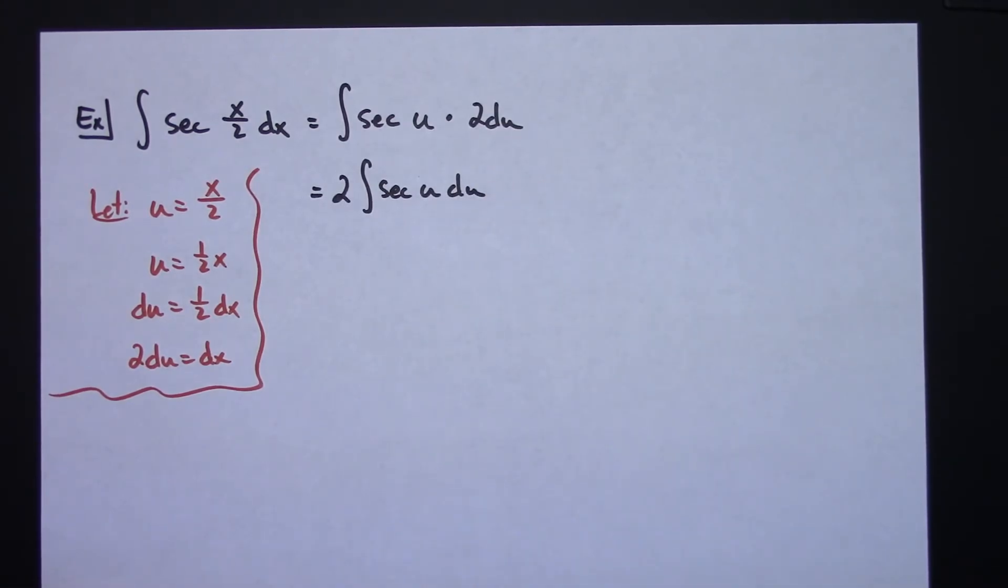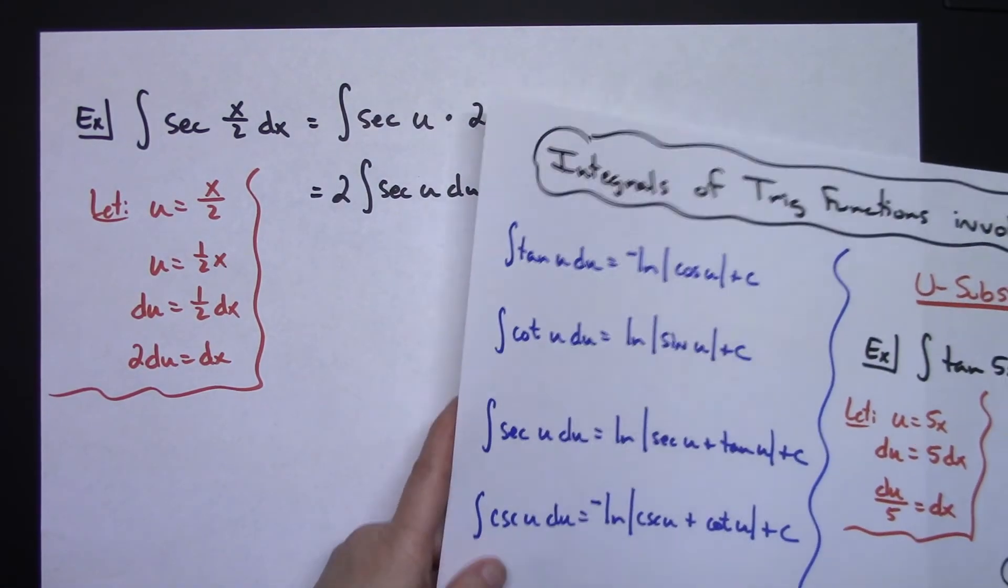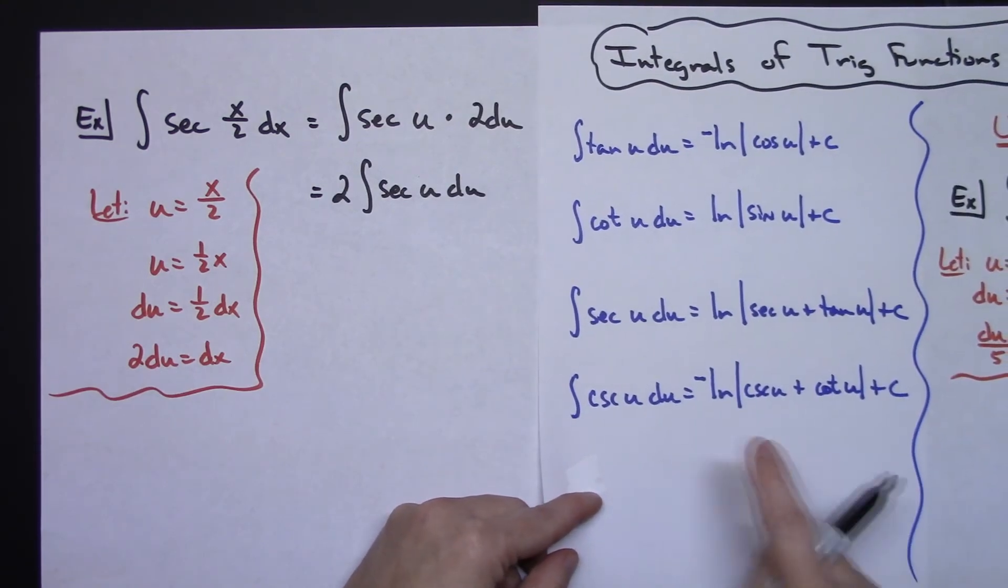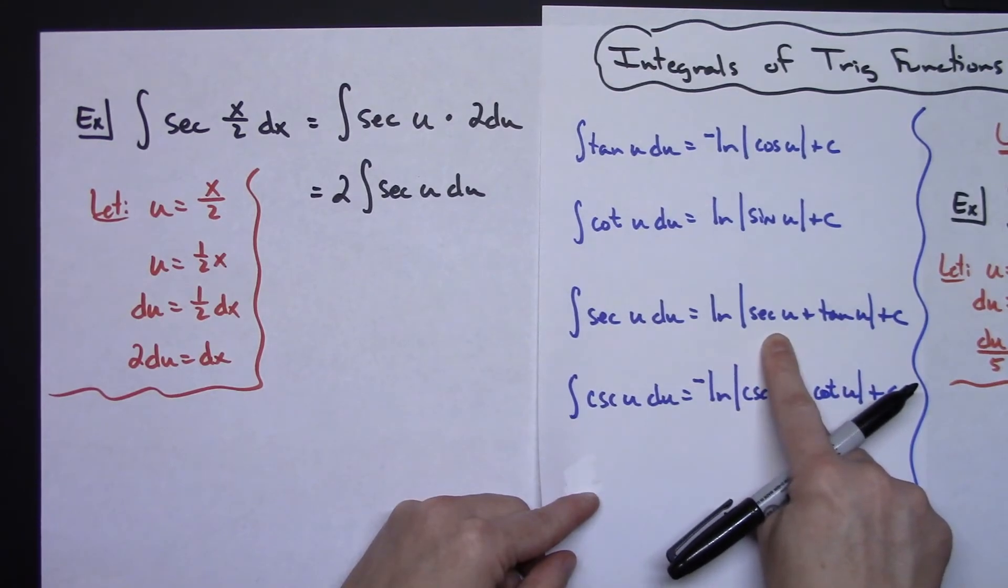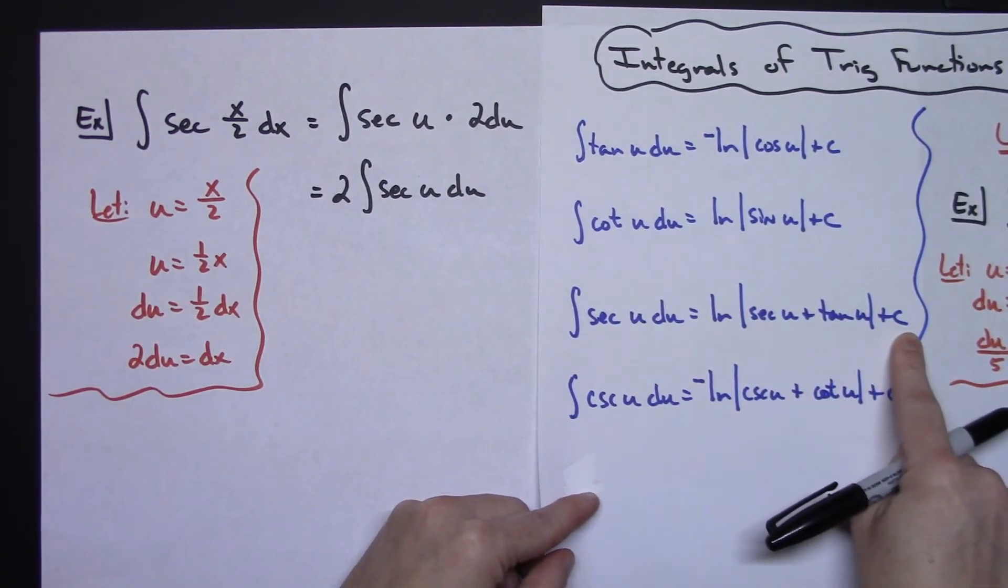I'm finally now down to something that I can integrate. Going back and looking at those formulas, secant is the natural log absolute value secant u plus tangent u plus c.